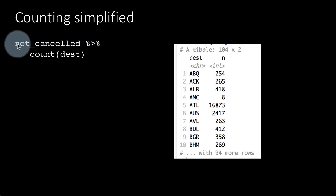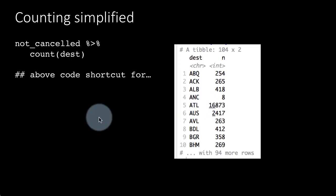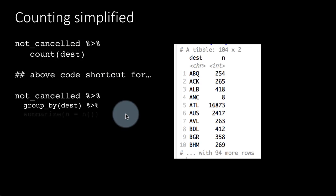But counting is so frequent that they actually have a function for doing that. So you can just do not_cancelled count destination and it's going to give you this result. That means there were 254 flights to Albuquerque, there were 16,873 flights to Atlanta and so on. The above code is nothing but a shortcut for this: group by destination summarize n equals n.